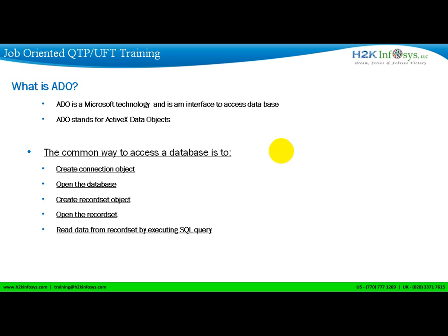ADO is ActiveX Data Objects, a Microsoft technology and an interface to access databases. You are going to use different objects to connect to the database and to read data. Those objects include the ADODB connection object and ADODB record set object. You open the database, open the record set by executing an SQL query, then read and validate the data from the database.